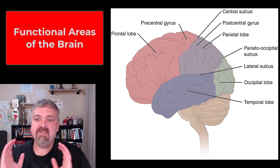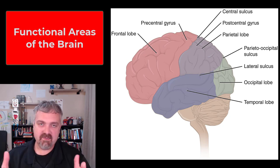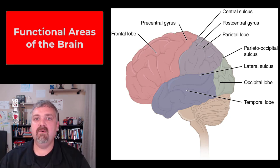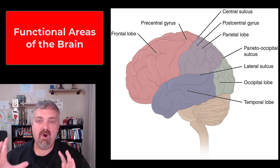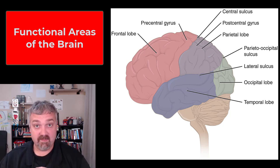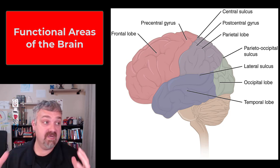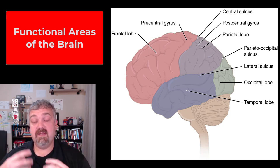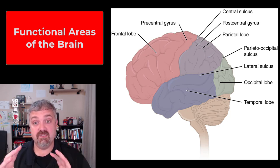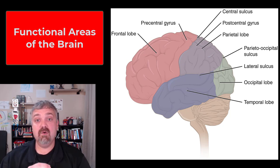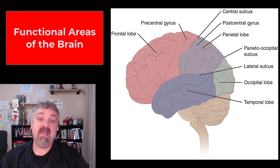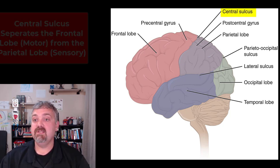Hey everybody, Dr. O here. This is probably the second most important video when it comes to the brain, besides the overview where I hit all the key stuff from all the key structures. This is going to be the parts of the cerebrum. The cerebrum is where conscious thought and higher order functions occur, but the cerebrum can be broken down into lobes, each with different primary functions.